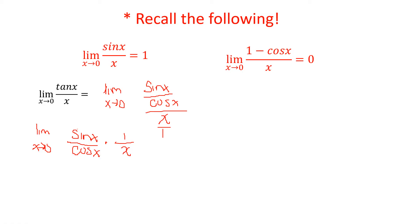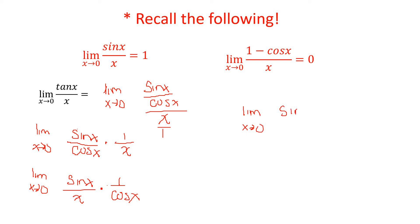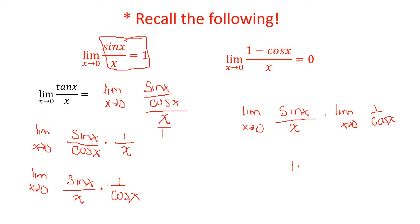Using the commutative property of multiplication, we can rewrite this as sin(x)/x times 1/cos(x). Now we can break this up using the product rule: the limit as x approaches 0 of sin(x)/x, times the limit as x approaches 0 of 1/cos(x). We know the limit of sin(x)/x is 1, and by direct substitution 1/cos(0) = 1, so 1 times 1 — our answer is 1.